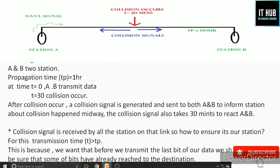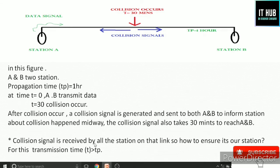After the collision at 30 minutes, the collision signal also takes 30 minutes to travel back to stations A and B. So the stations receive the collision signal after a total of 60 minutes. The collision signal is received by all stations on the link. Since multiple nodes are connected, the jam signal goes to all connected nodes. The key solution is: transmission time must always be greater than propagation time — this ensures the station is still actively transmitting when the collision signal returns.